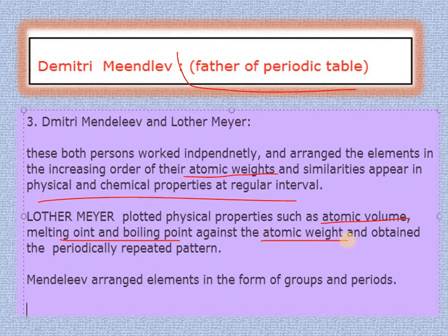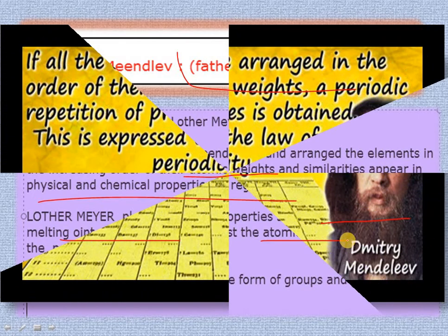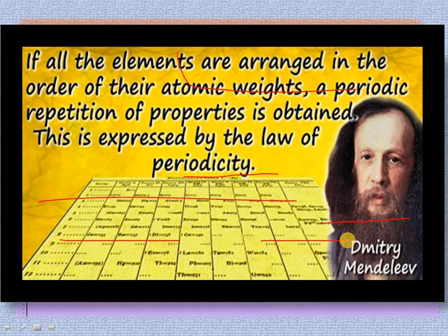If atomic weight is higher, then melting and boiling point will also be higher. After collaboration with Lothar Meyer, Mendeleev arranged elements in periods and groups. He stated that if all elements are arranged in the order of their atomic weight, a periodic repetition of properties is obtained — this is expressed by the Law of Periodicity, as told by Dmitri Mendeleev.